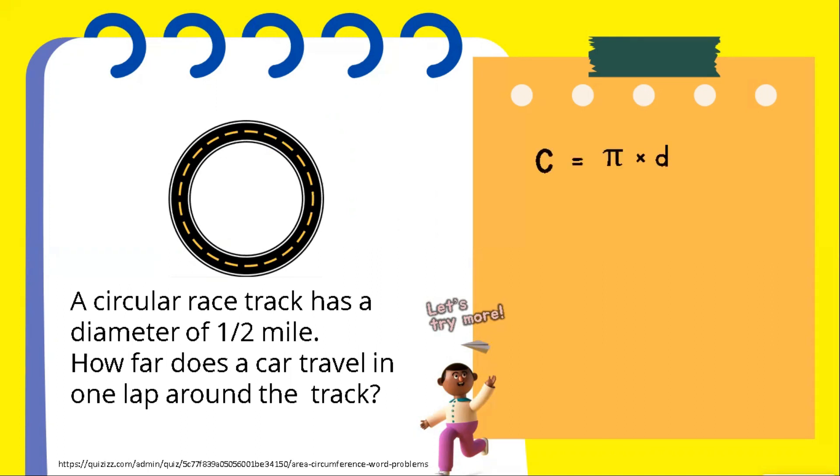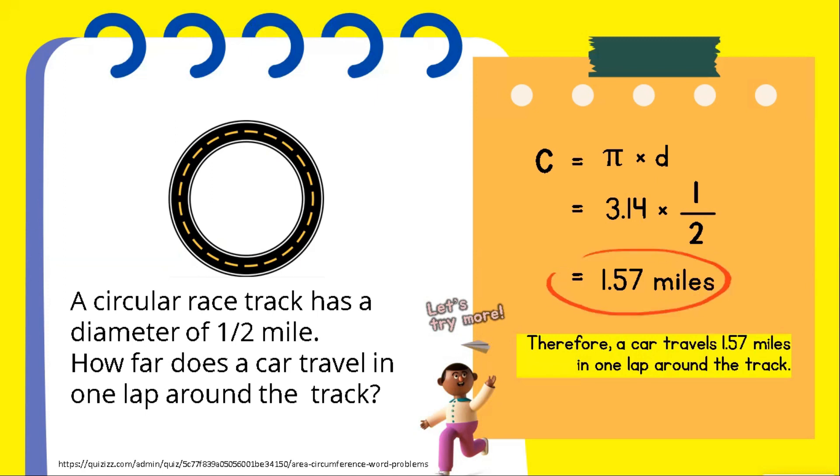Circumference of the circle is equal to pi times the diameter. Let's substitute. Since the value of the pi is 3.14, it will be multiplied by the diameter, which is one-half mile. The result is 1.57 miles. Therefore, a car travels 1.57 miles in one loop around the track.